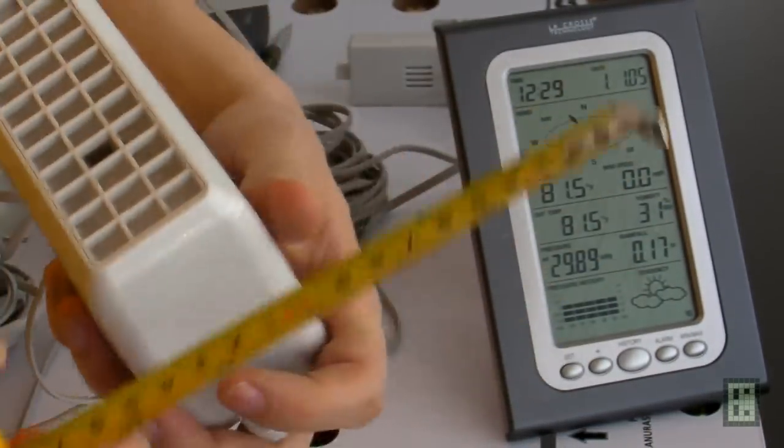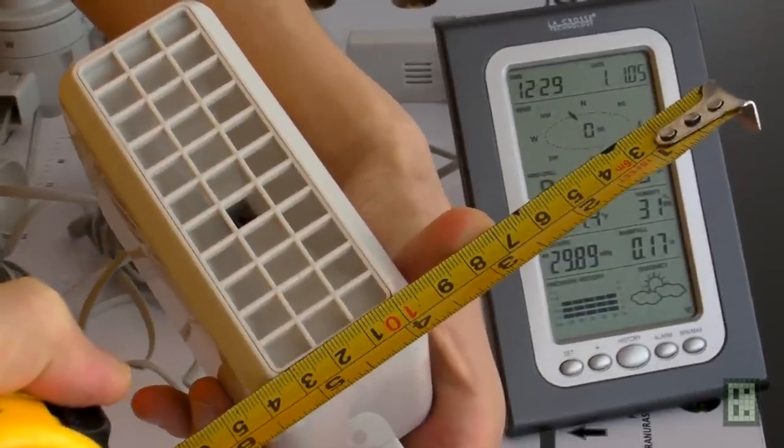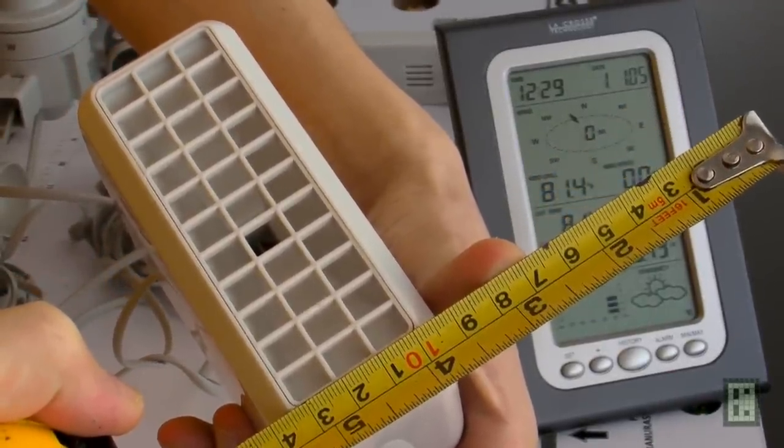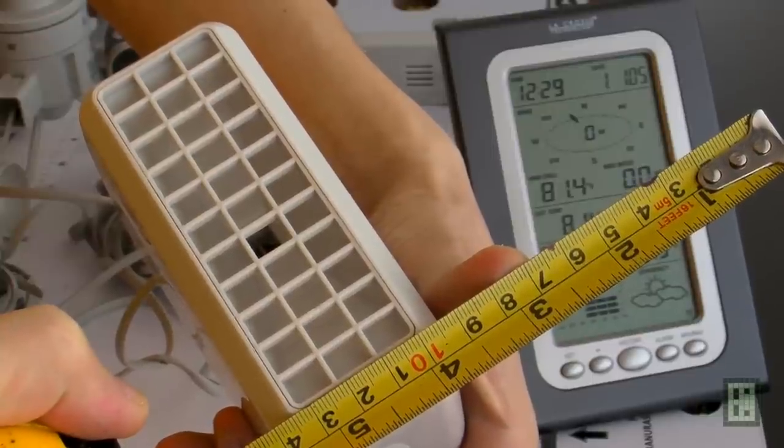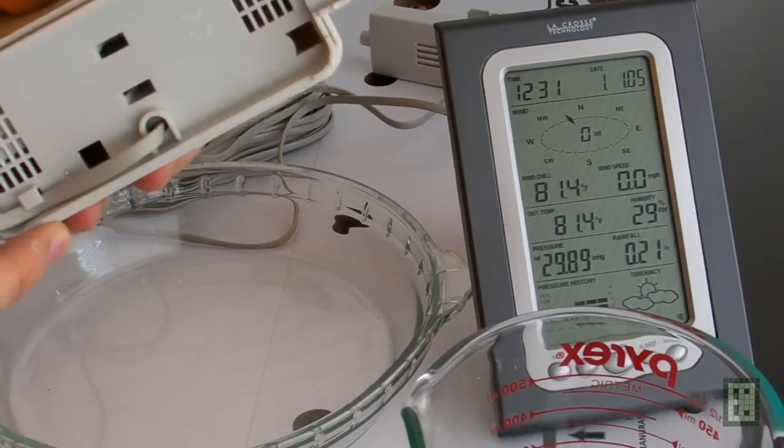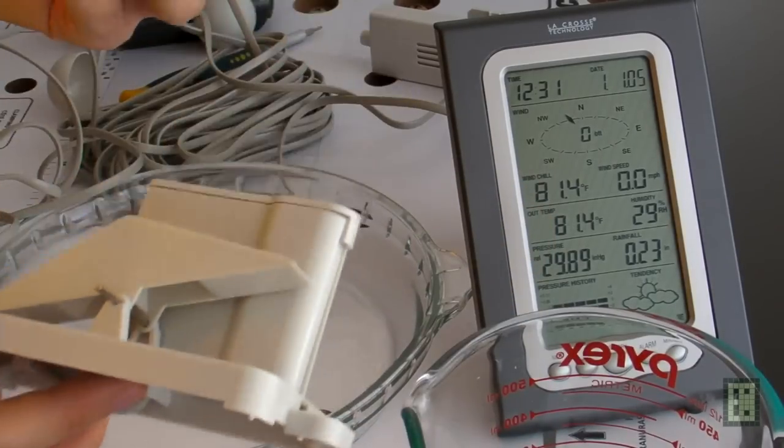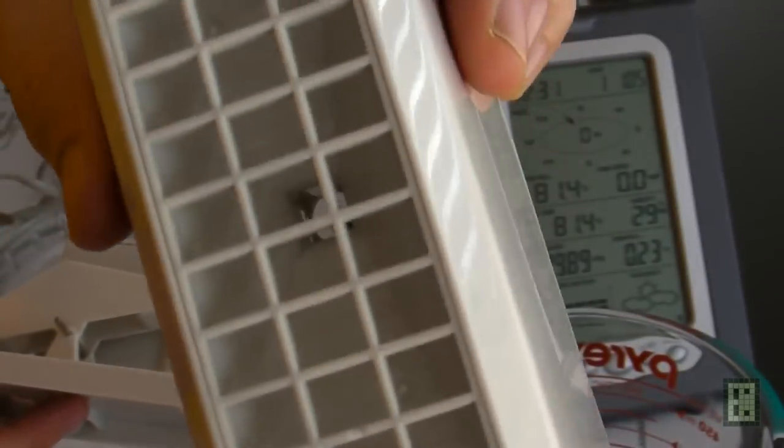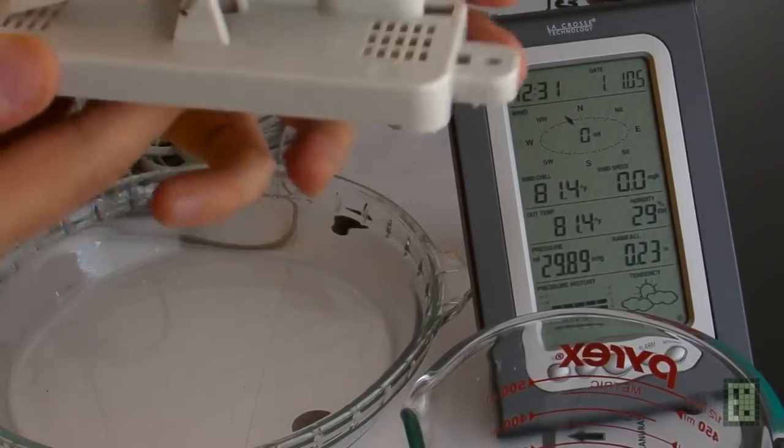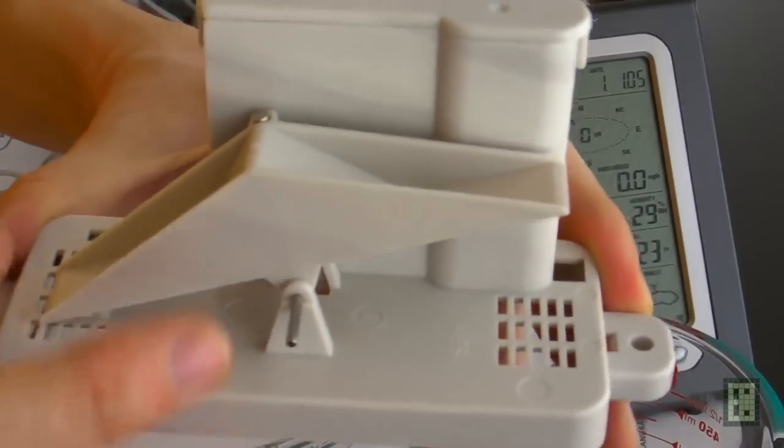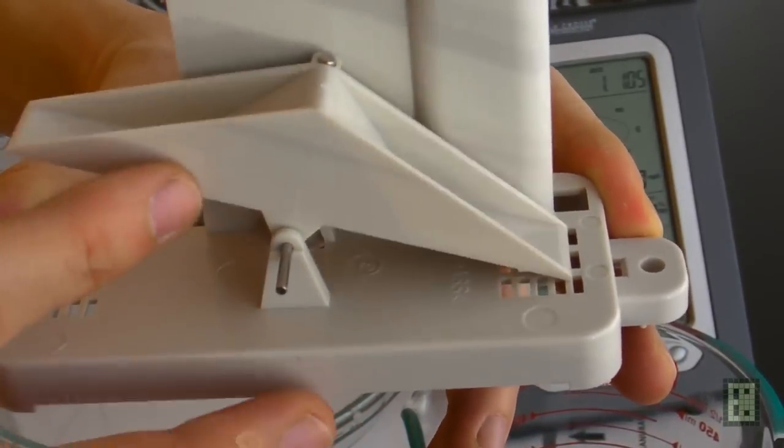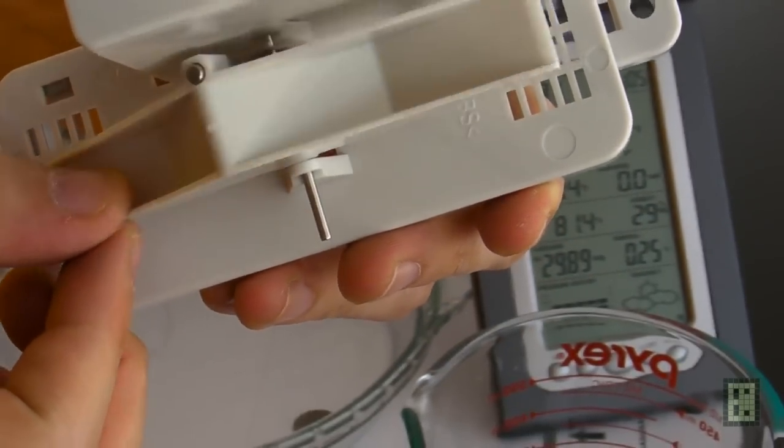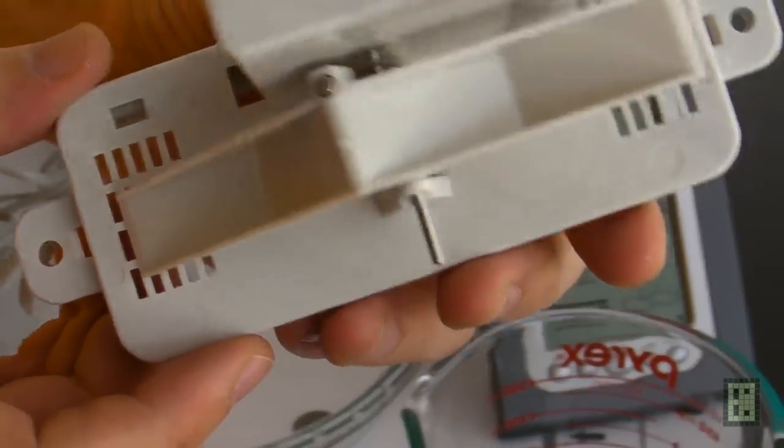Now this is the rainfall sensor, and you see it's about 10 cm by 3 cm, this is about 30 square centimeters. This is the area that collects the rain water, and as you can see, it's just a funnel. And this is a kind of carousel or something like that, and it's like a balance.